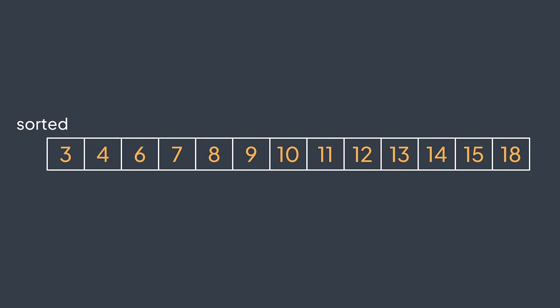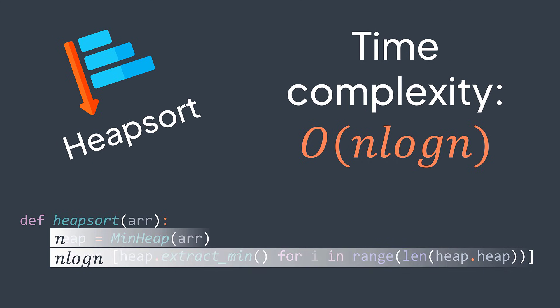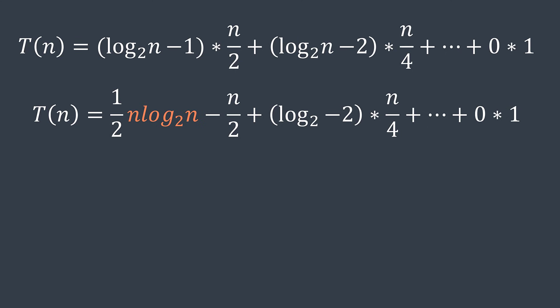The time complexity of heap sort is O(n log n): even though heapifying costs O(n), calling extract min n times costs O(n log n) because extract min always calls sift down on the root and the root is far from the bottom. The first n/2 extractions may require log(n)−1 iterations, which leads to an O(n log n) time complexity for heap sort.